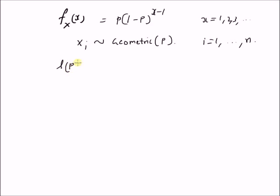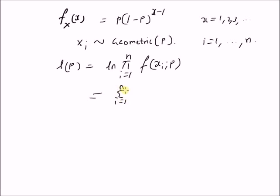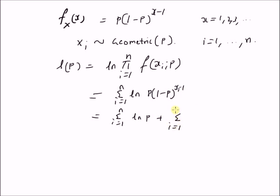The log-likelihood function L(p) is defined as the logarithm of the product from i equal to 1 to n of the likelihood function — that is, f(x_i, p). This can be written as the summation from i=1 to n of log(p), plus the summation from i=1 to n of (x_i minus 1) multiplied by log(1 minus p). This is the log-likelihood function corresponding to the geometric distribution.